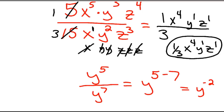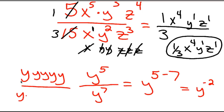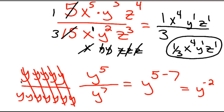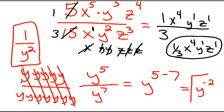So I hope this helps — we'll look at negative exponents as well. One last thing to show: y to the 5th is five y's over seven y's. Five pairs cancel, leaving 1 over y squared, which is the same as y to the negative 2.